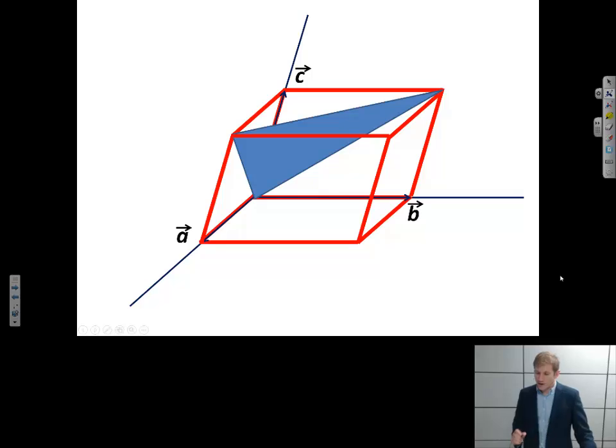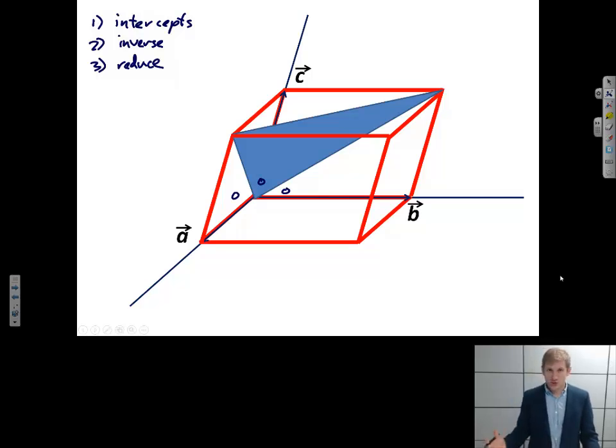Let's try another tricky one. Again, I'm always going to do these three same steps. I look for the intercepts, I take the inverse, and then I reduce my fractions. So where are the intercepts in this case? Well, to me, it looks like it intercepts A at 0, it intercepts B at 0, and it intercepts C at 0. So if I were to take the inverse of 0, 0, 0, I'm going to get infinity, infinity, infinity, and this is not a really well-defined plane. So the problem is that I'm passing through the origin.